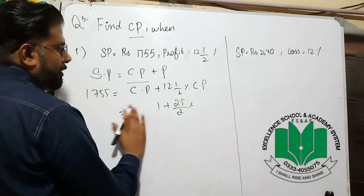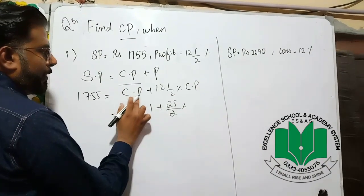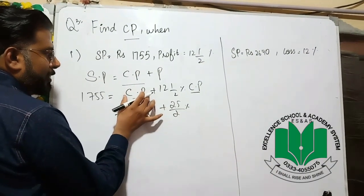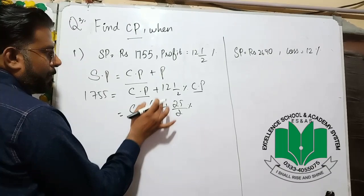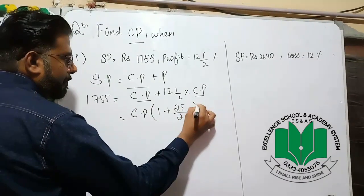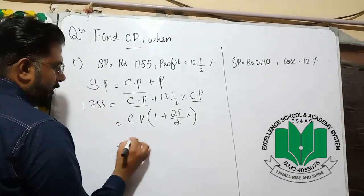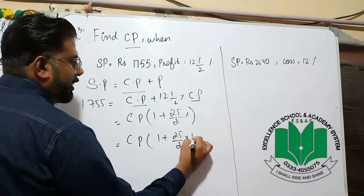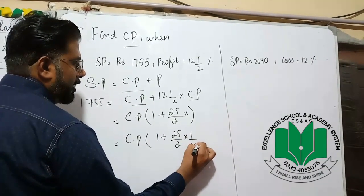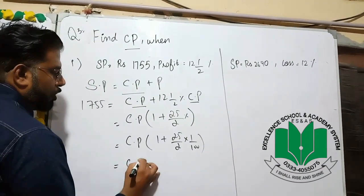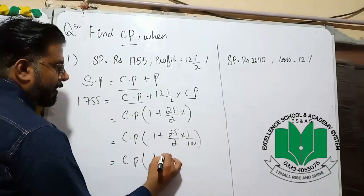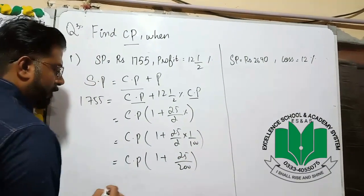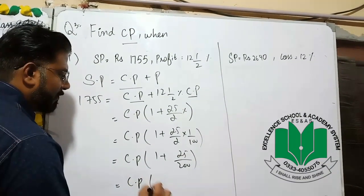I have two cost prices. Here cost price is given. Cost price is given — 1 plus 25 by 2 percent. Cost price is given. 1 plus 25 by 200. Cost price is given.